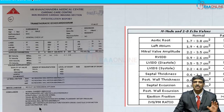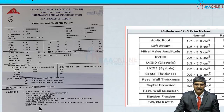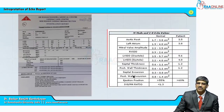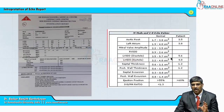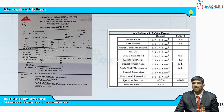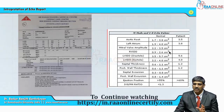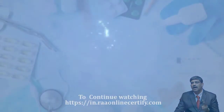If ejection fraction is normal, we go and anesthetize the case. Another important thing is that you have to compare with the normal values. Normal values will be available, and you have to put the patient value and see whether the patient is apparently normal or not.